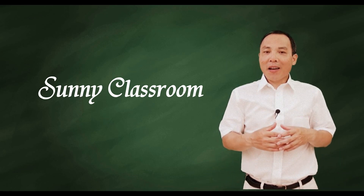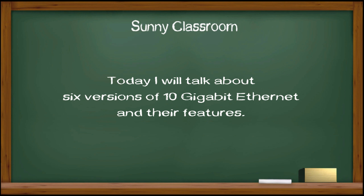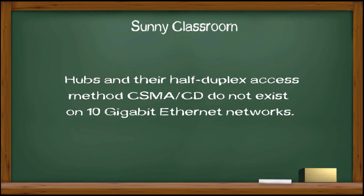Hello, and this is Sunny. Welcome back. Today I will talk about six versions of 10 Gigabit Ethernet and their features. 10 Gigabit Ethernet defines four duplex point-to-point links which are generally connected by network switches. Hubs and their half-duplex access method CSMA/CD do not exist on 10 Gigabit Ethernet networks.